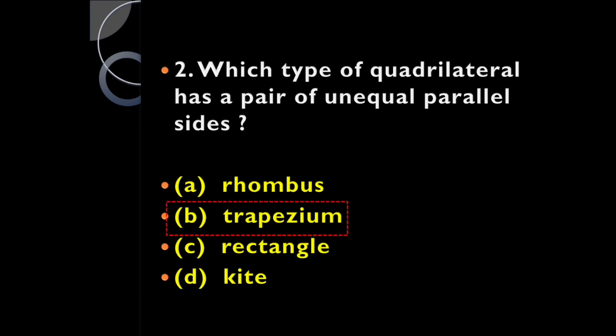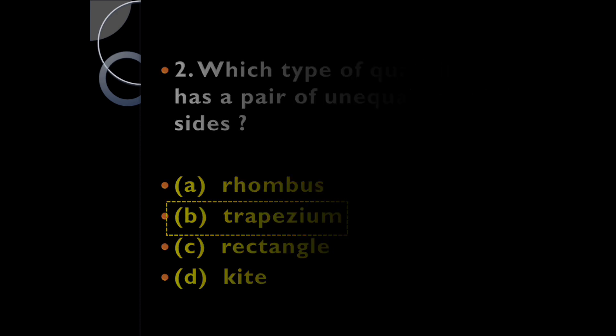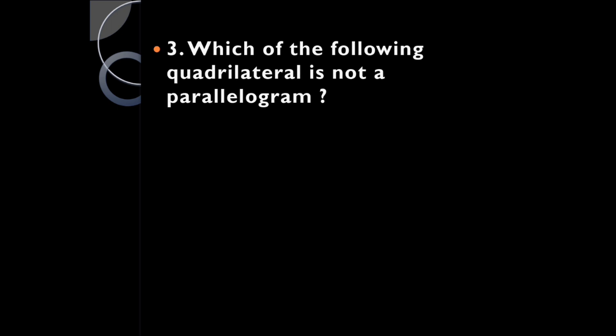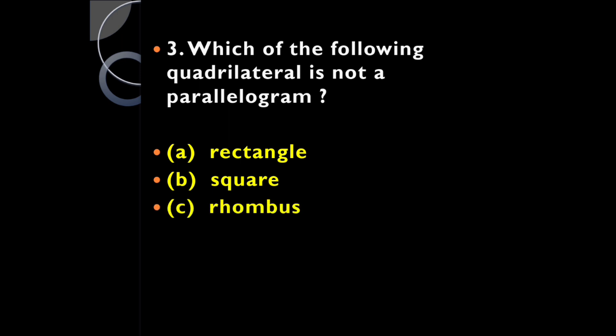It's a trapezium, because a trapezium has a pair of parallel sides but they are not equal in length. So trapezium is the correct option. Which of the following quadrilaterals is NOT a parallelogram: rectangle, square, rhombus, or kite?